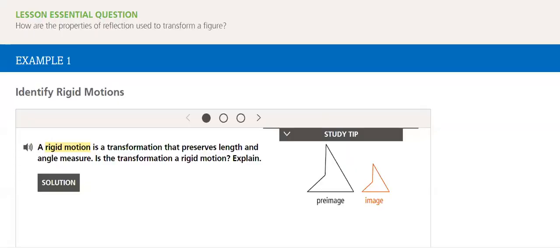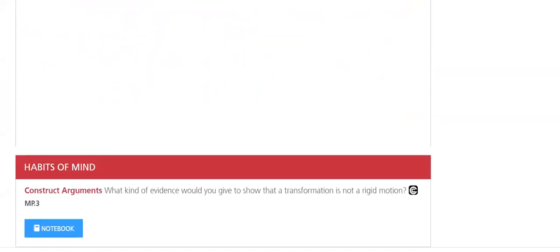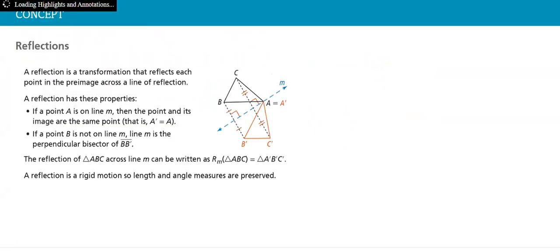First example is about identifying rigid motions. What is it? It's a transformation that preserves length and angle measure. Is that transformation a rigid motion here? We will learn if it's yes or no. We will go through many other examples in which we can identify.